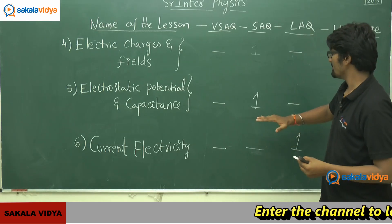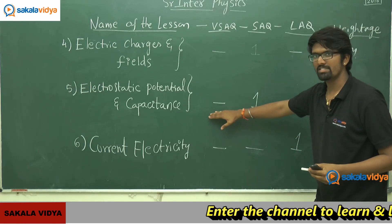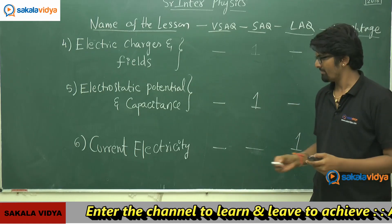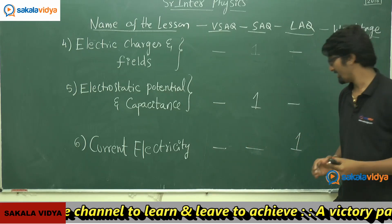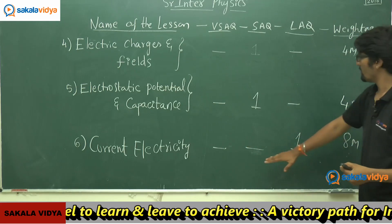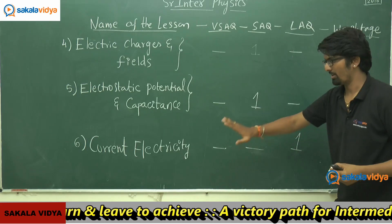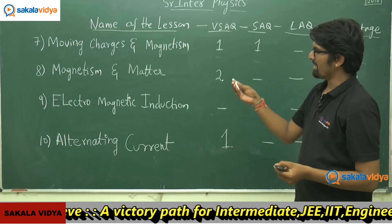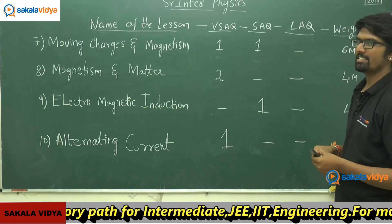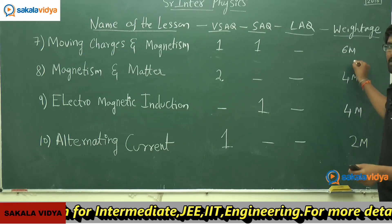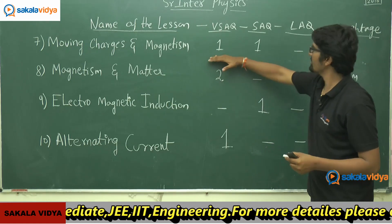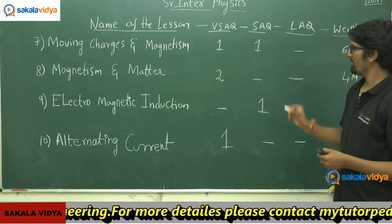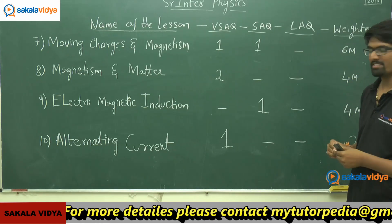The sixth chapter, Current Electricity, carries 8 marks and we are going to get directly one LAQ, no SAQ, and no VSAQ. The seventh chapter, Moving Charges and Magnetism, has a weightage of 6 marks — we are going to get one very short answer type question, one SAQ, and no LAQ.